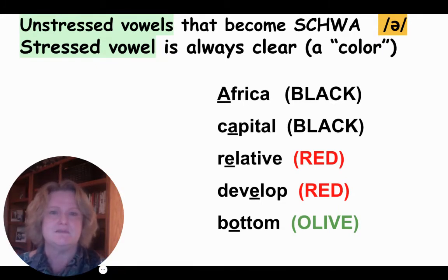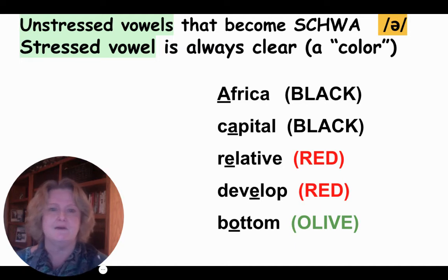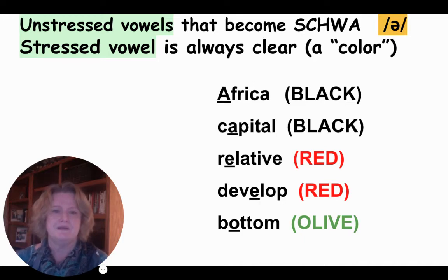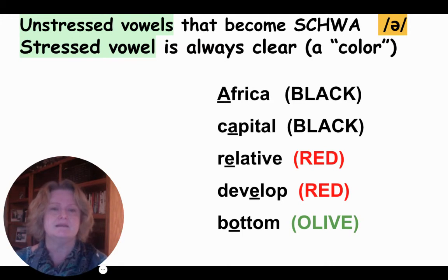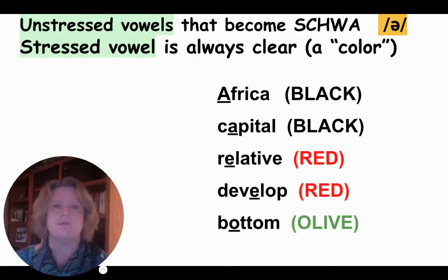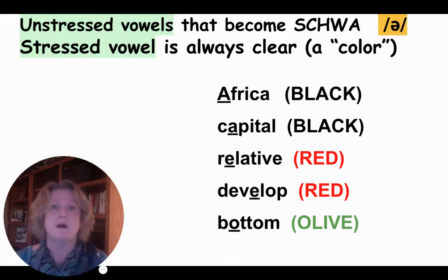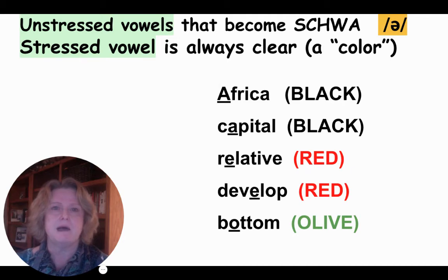Relative has stress on the first syllable E, which is red — but the A and I are also schwa. Develop has stress on the middle E, which is red; the first E is just a schwa, and the OP is also a schwa — develop. In bottom, American English stresses 'ba,' which is olive, but 'tom' becomes just a schwa — bottom.